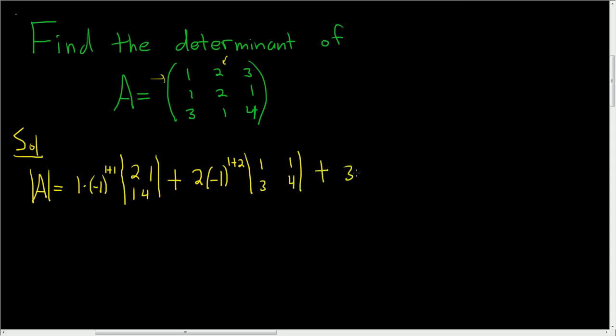Then you go to the 3, and then you write the negative 1. We're still in the first row, third column. First row, third column. So you do 1 plus 3. Then you write the bar. Then you cross out the corresponding row and column. I guess I can cross it out now because we're done. So you cross these out and you get 1, 2, 3, 1.